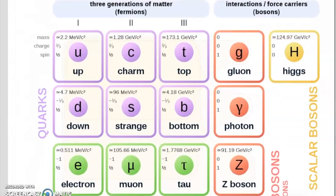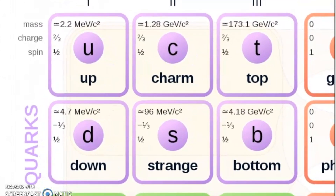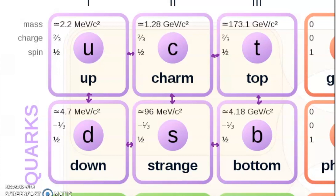Let's take a look at the quarks. They have some very funny names: up, down, charm, strange, top, and bottom. The up and down are very appropriately named — they share similar properties. Charm and strange go together, and top and bottom go together. You'll also see properties going across: up, charm, and top share some properties; down, strange, and bottom share others. They're arranged by both color and shared properties.